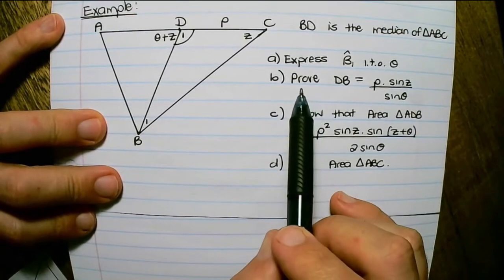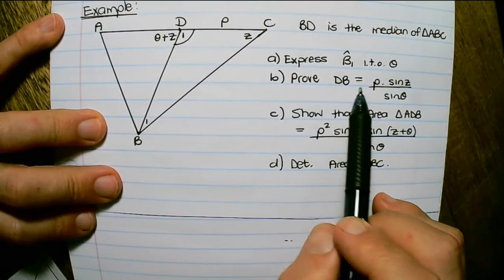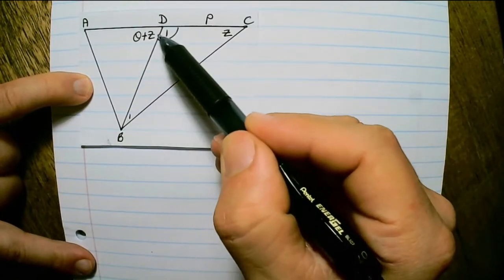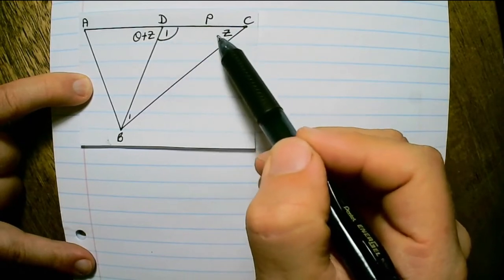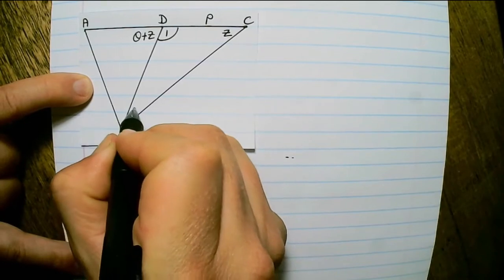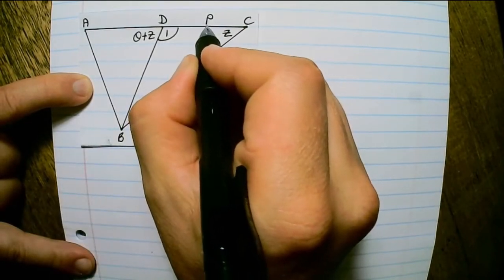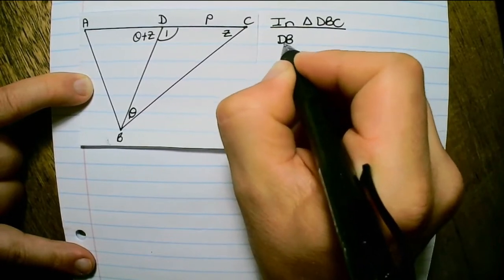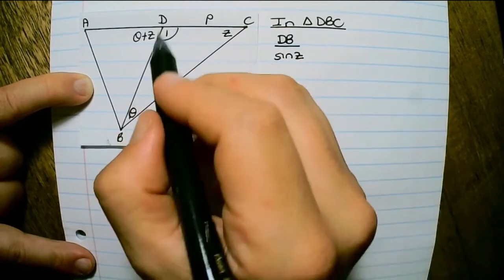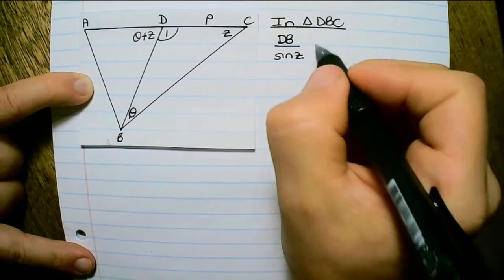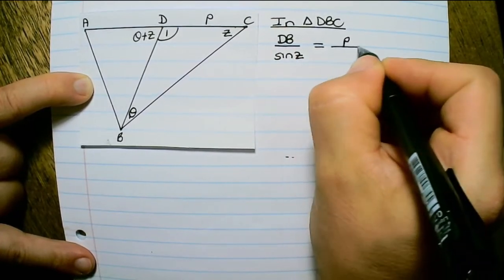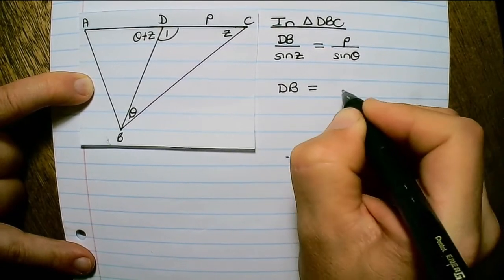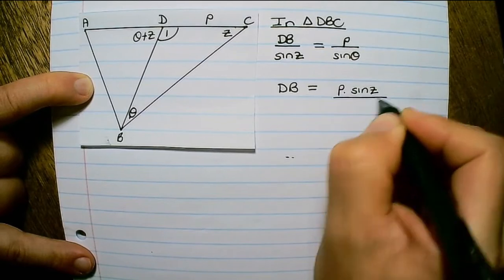The second question asks us to prove that DB equals P sine Z over sine theta. Within triangle DBC, using the sine rule: DB over sine Z equals P over sine theta, because DB is opposite angle C (which is Z) and P (DC) is opposite angle B1 (which is theta). Isolating DB gives DB equals P times sine Z over sine theta.